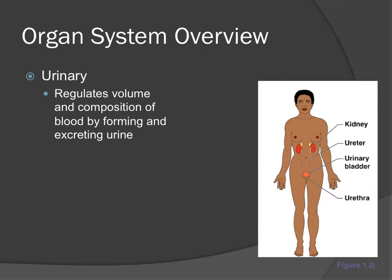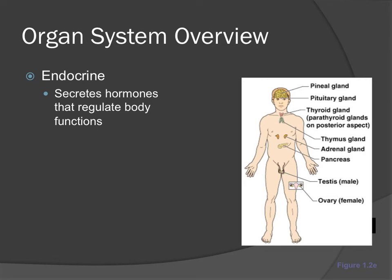The urinary system regulates volume and composition of the blood by forming and excreting urine. Its anatomy includes the kidney, ureter, urinary bladder, and urethra. The endocrine system — one of the most interesting chapters — is all about the hormones of the body. We secrete hormones that regulate all body functions, from your sleep-wake cycle to your stress levels. Its anatomy includes the pineal gland, pituitary gland, thyroid gland, thymus gland, adrenal gland, pancreas, and reproductive organs.